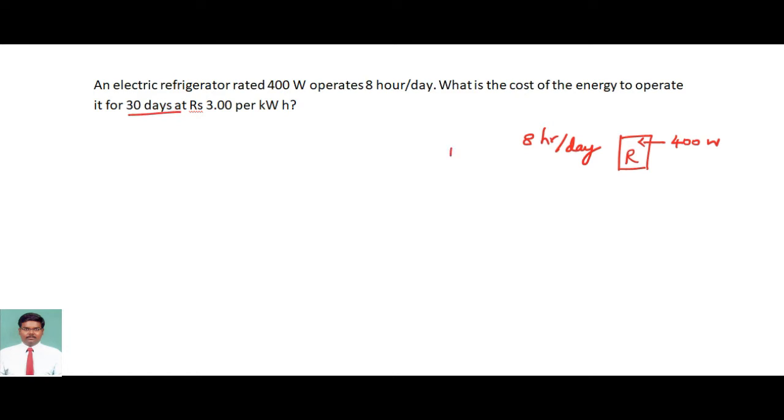One day I am going to use it for 8 hours, so I have to calculate for 30 days the usage. Finally I have to calculate the amount I have to pay. At rupees 3 per kilowatt hour, I have to calculate the energy then multiply by 3 per kilowatt hour to get the amount to be paid to the EB office.